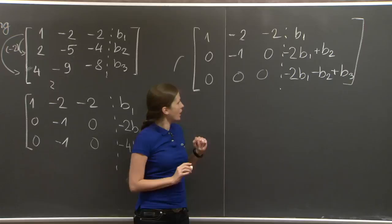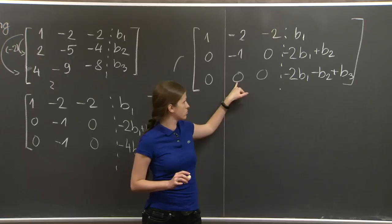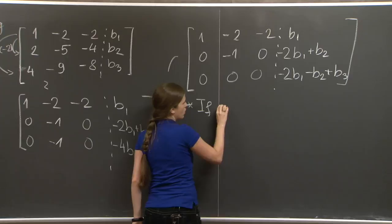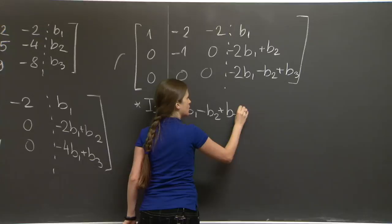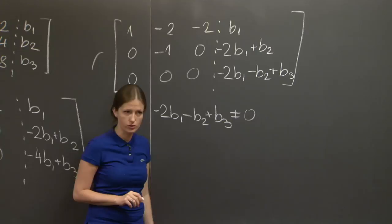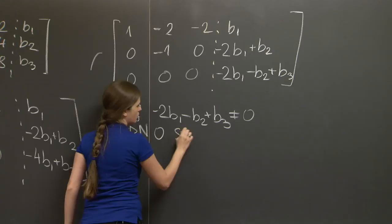I hope I did this right. OK. So now let's think of it as a system again. The last equation says 0 equals this expression in b1, b2, and b3. So this is something to note down. If minus 2 b1 minus b2 plus b3 is some number that's not 0, then the last equation says 0 equals non-zero. It's never going to be satisfied, and the entire system is never going to have a solution. So in this case, we have no solutions.